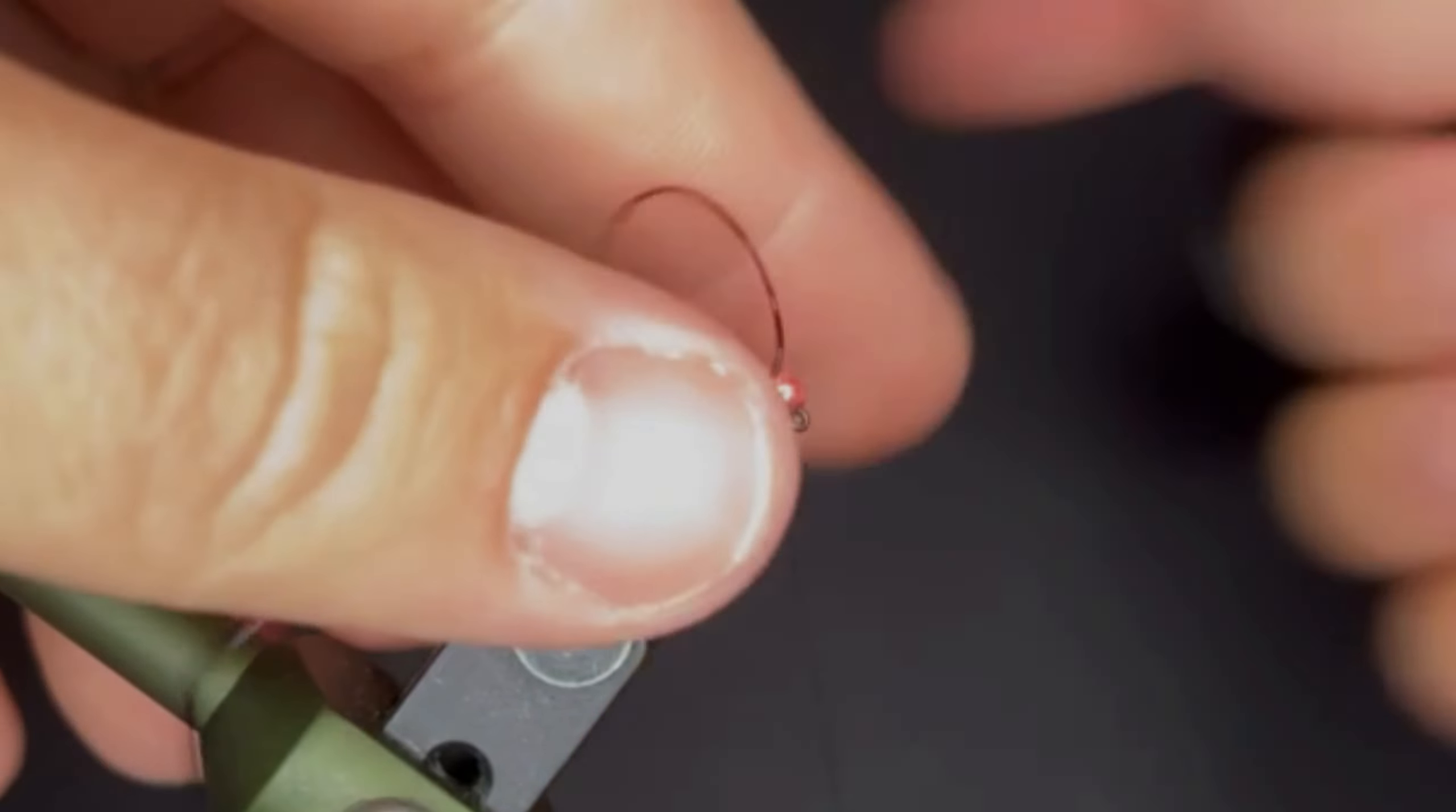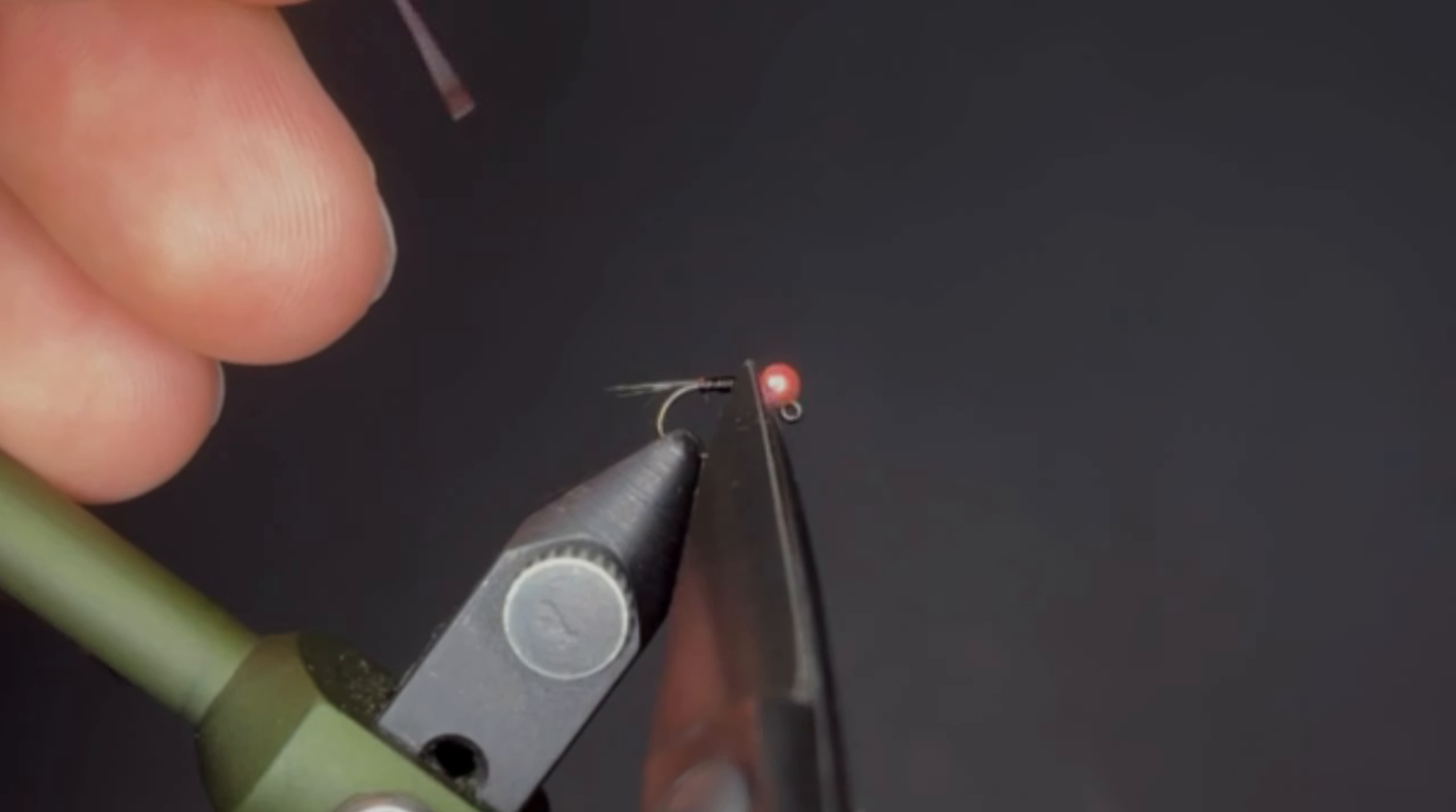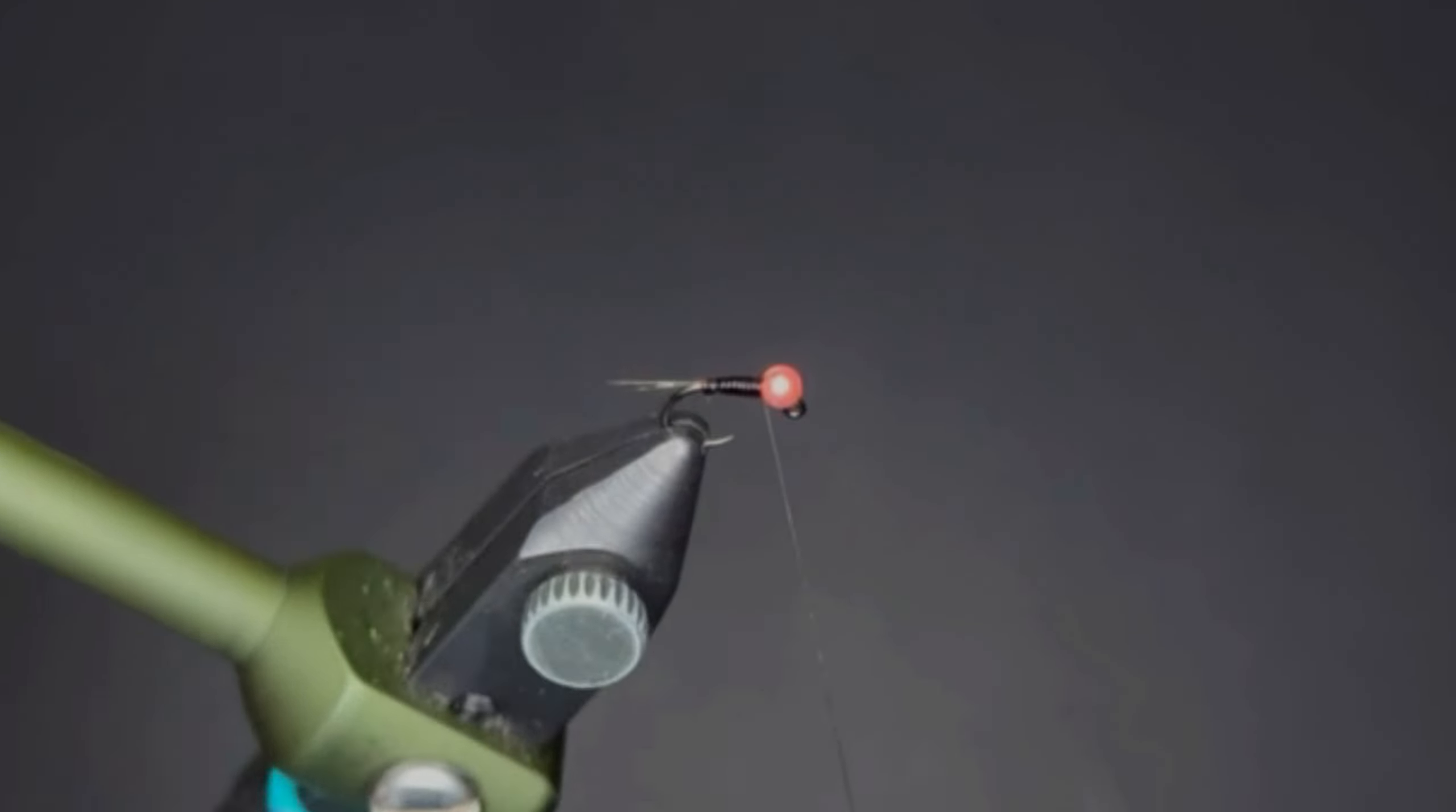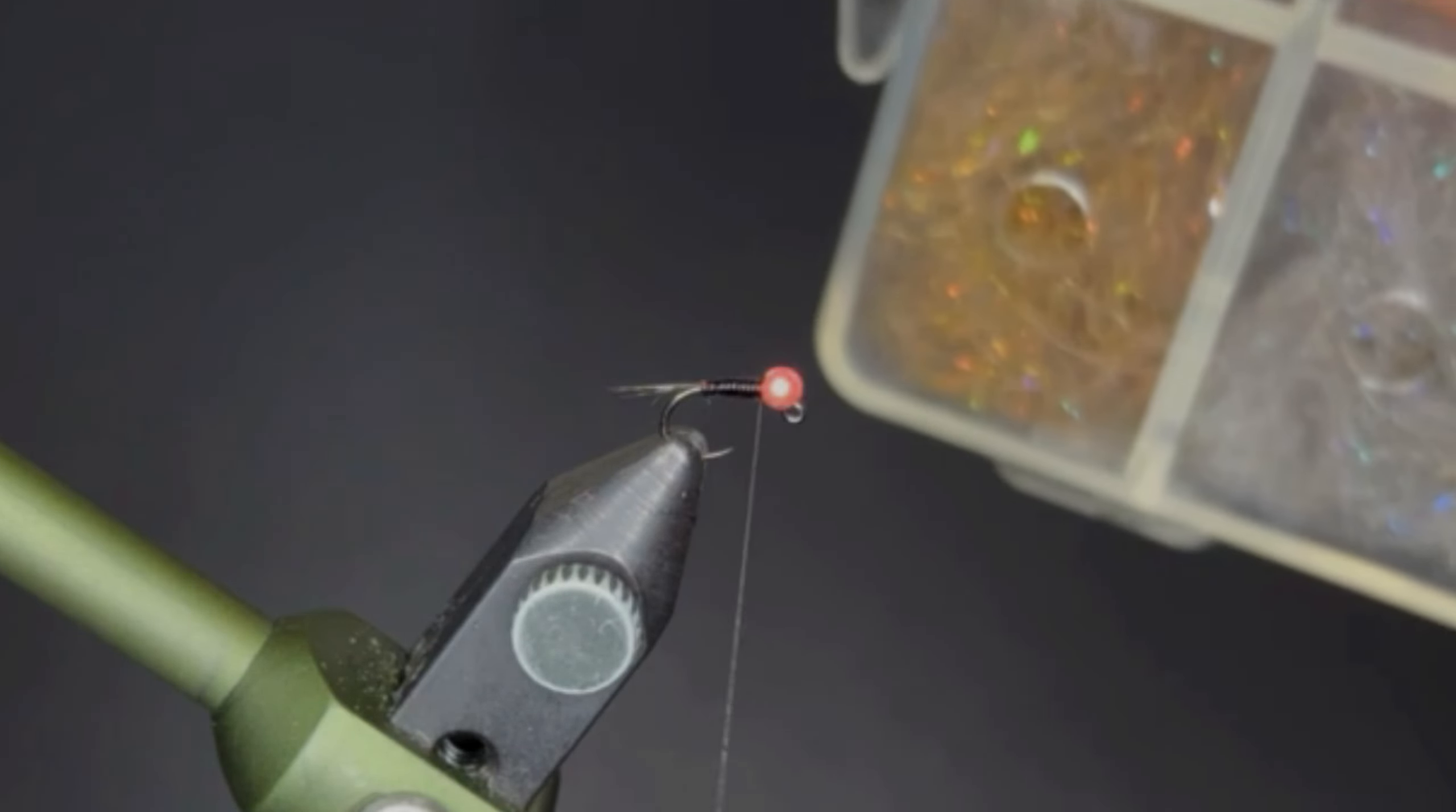Another trick with this stretch tubing is we can pull it tight to trim it and it's going to be super close cut. You can't even see where I just cut that off - that's a super nice tapered body. Next thing we're going to do is come in with some dubbing.